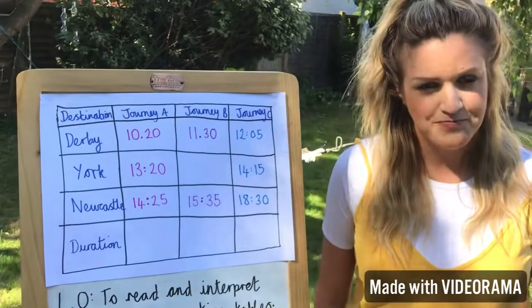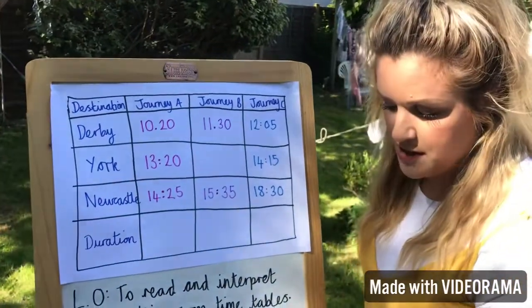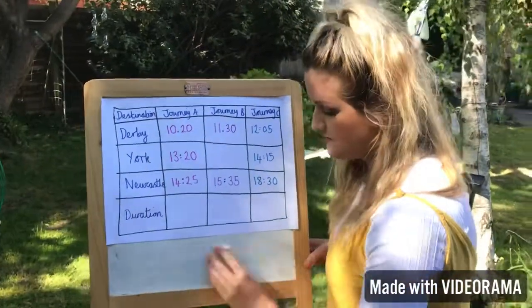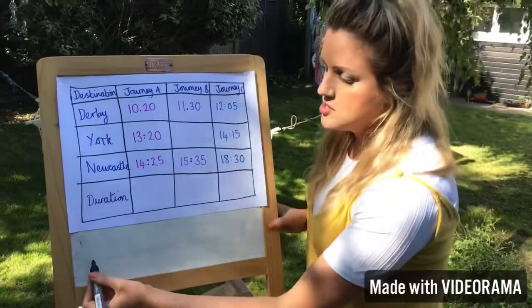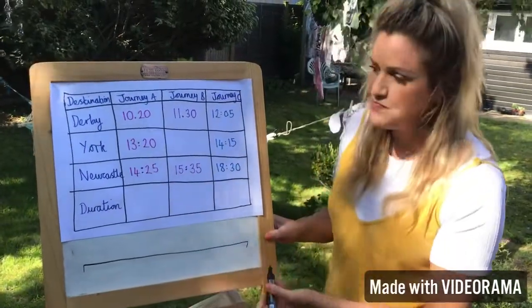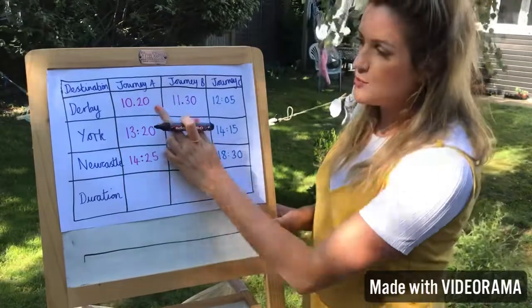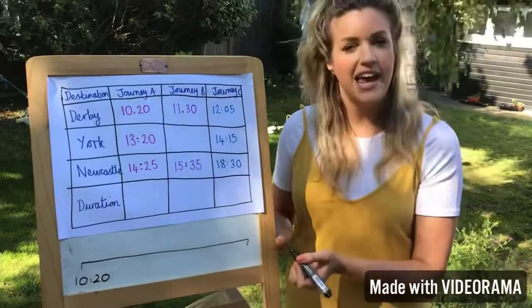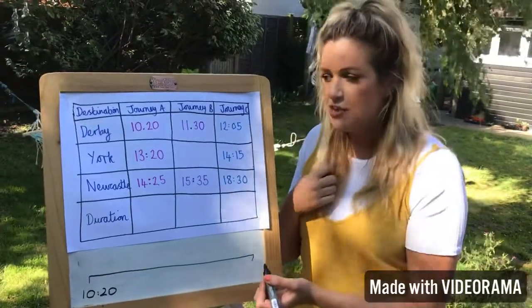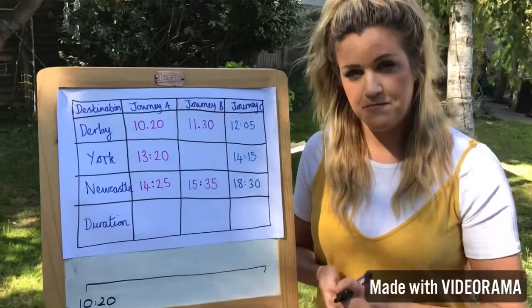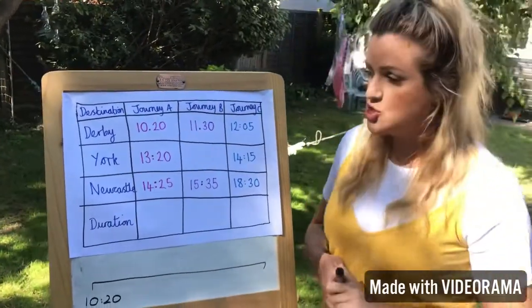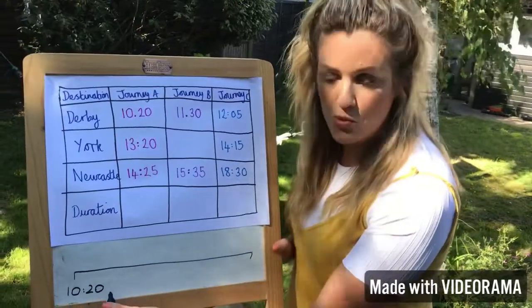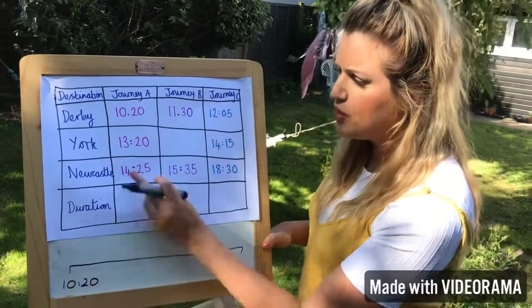Think back to yesterday — if we're working out the duration of something, what can we use to help us? A timeline. So here's my timeline. I can see from my timetable that it leaves Derby train station at 10:20. Now think about whether that's in the morning or the evening — we're working with 24-hour digital time. It's below 12, so that means it's in the morning.